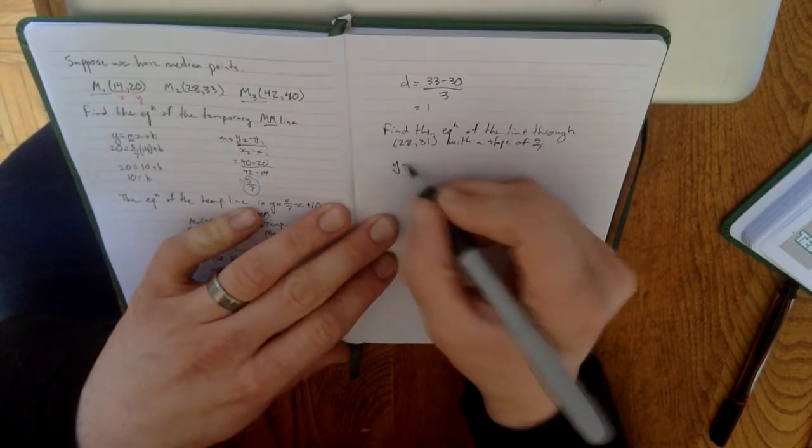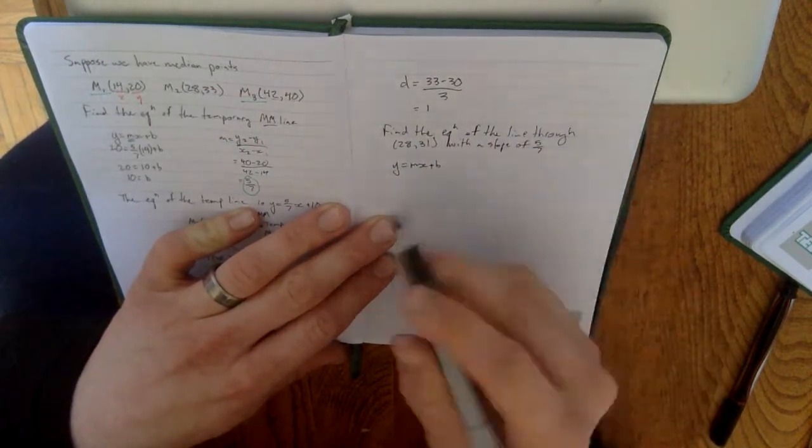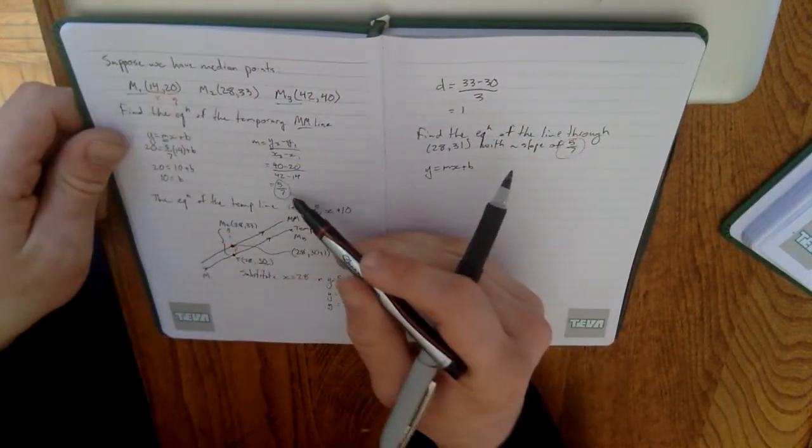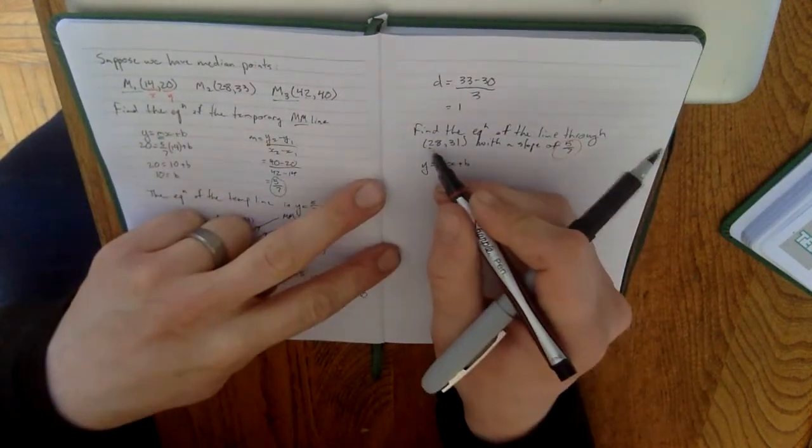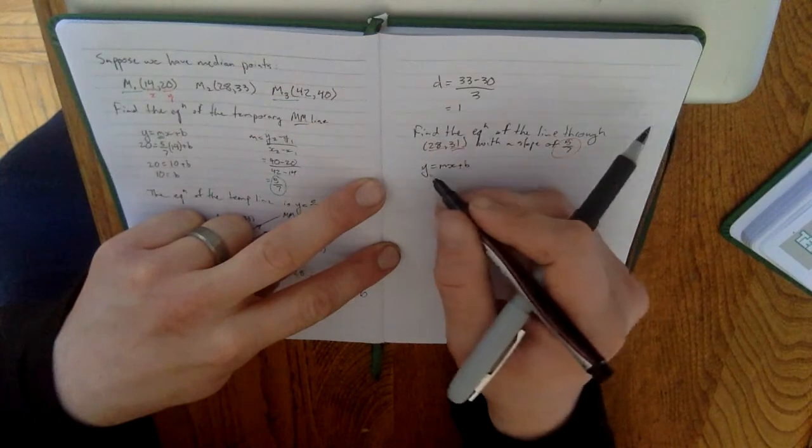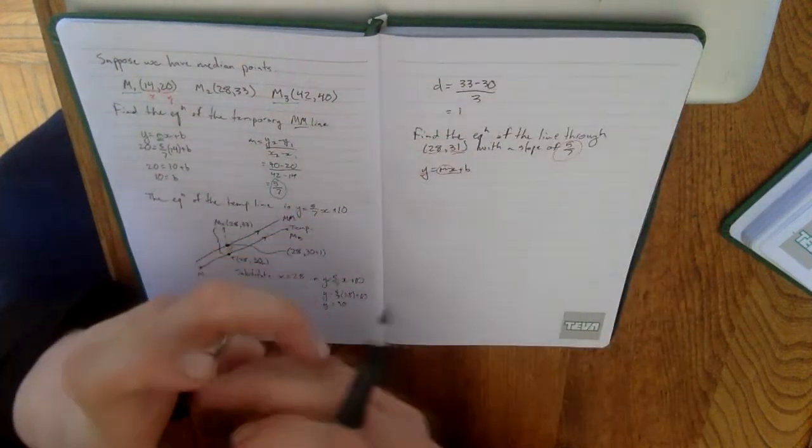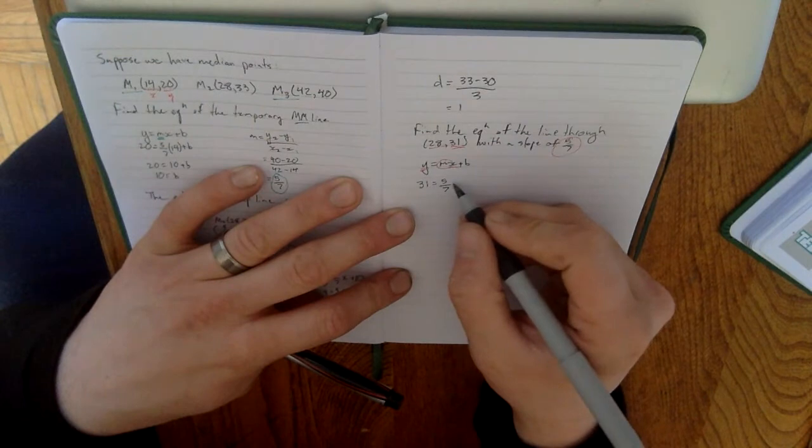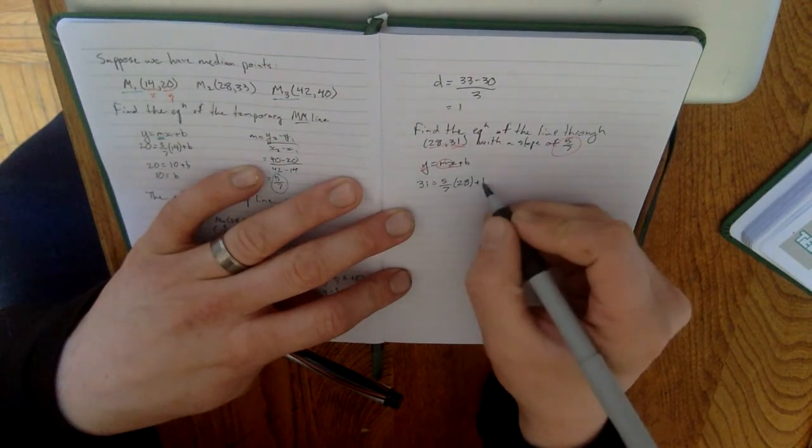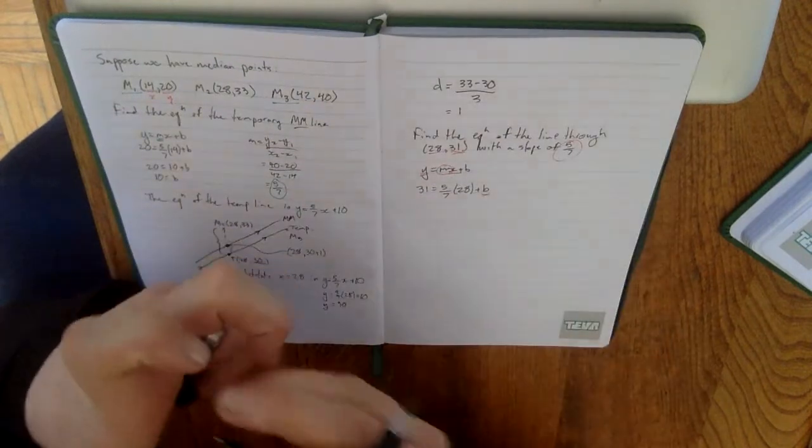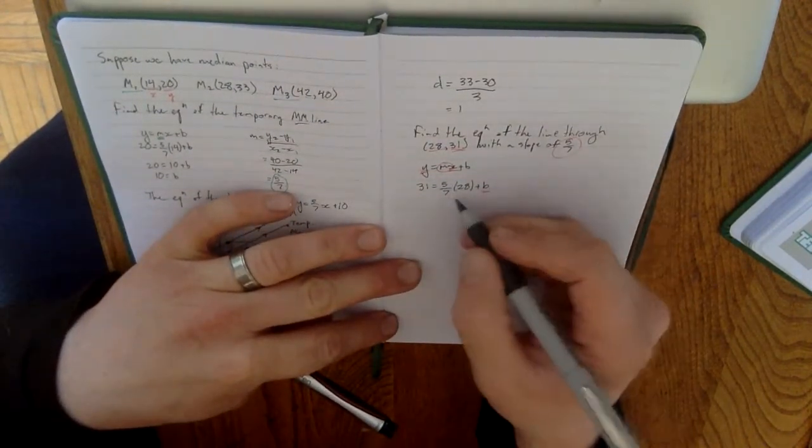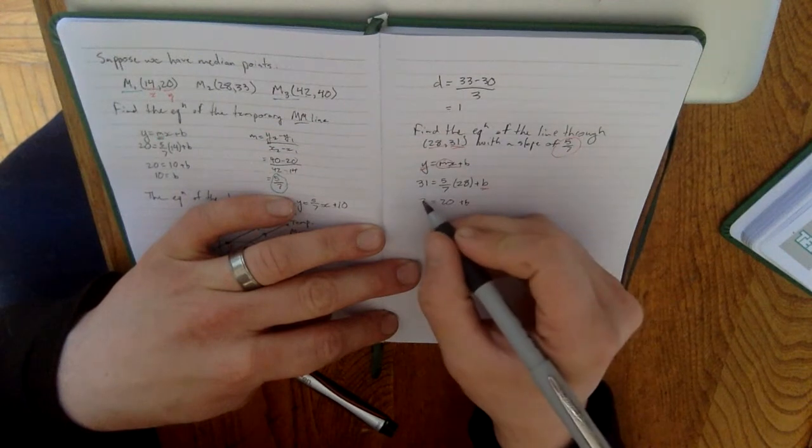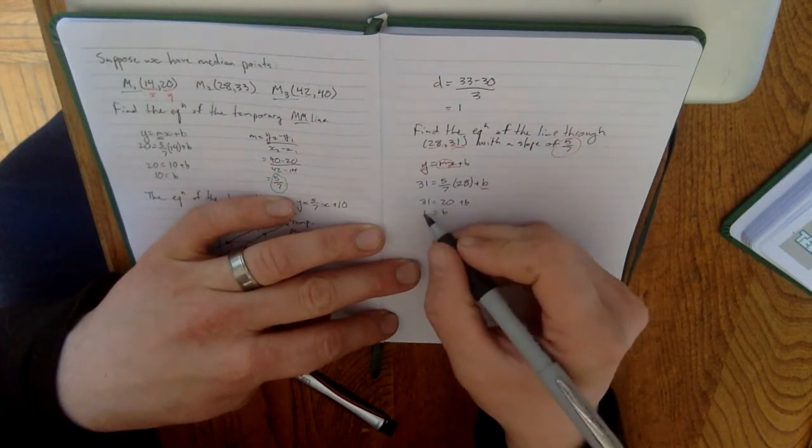So, we'll do this by replacing in y equals mx plus b all of our values. So, we'll replace the m value with the slope. Remember that was the original slope that we found. We'll replace our x value with 28 and our y value with 31. Once we replace those things, we'll have 31 is equal to 5 over 7. Our x value is 28 plus b. We now only have one thing left to solve for and that's our value of b. So, just some quick simplification here. 7 goes into 28 four times times 5 is 20. And solving for b gives me a b value of 11.